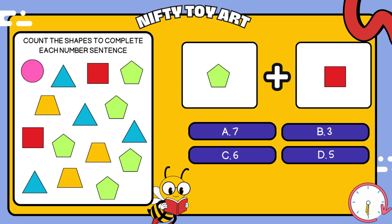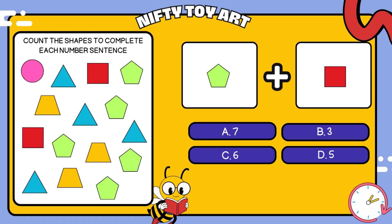I have a pentagon plus square. How many all together? That's right, seven.